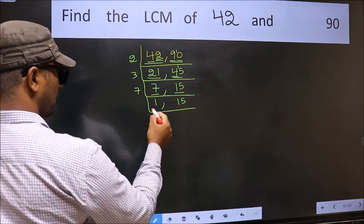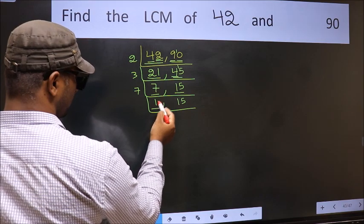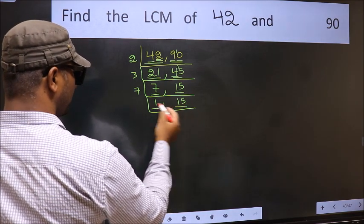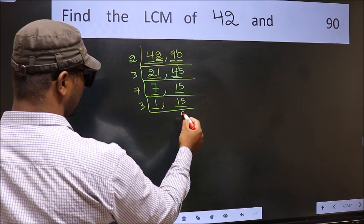Now we got 1 here. So focus on the other number 15. 15 is 3 times 5.